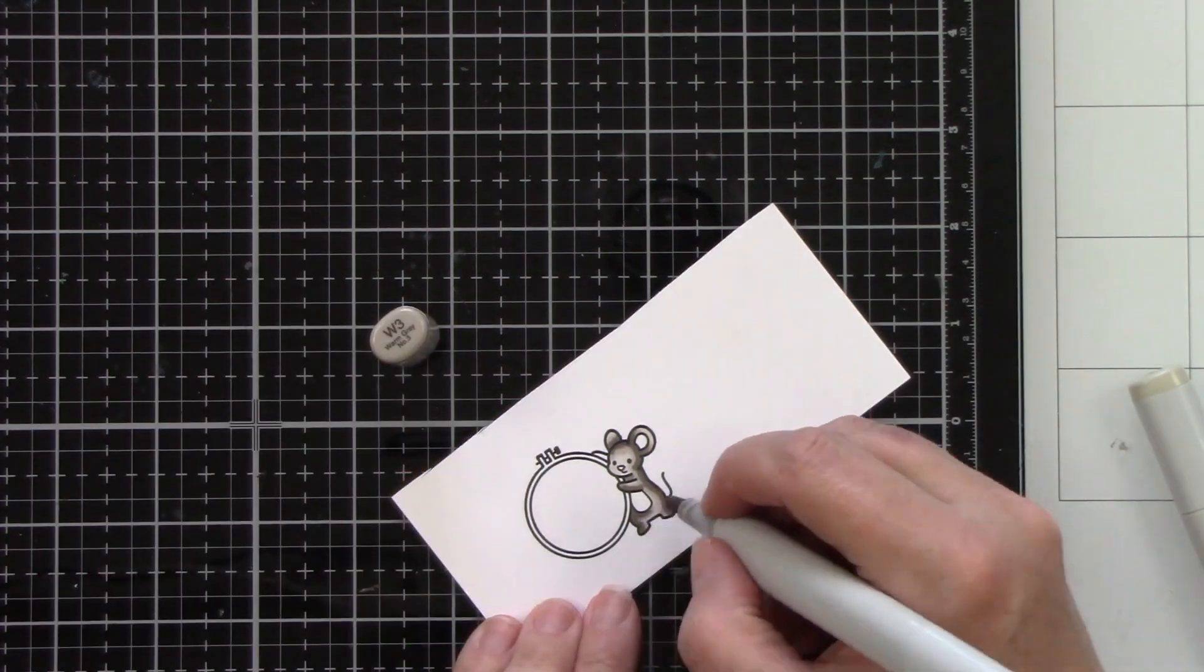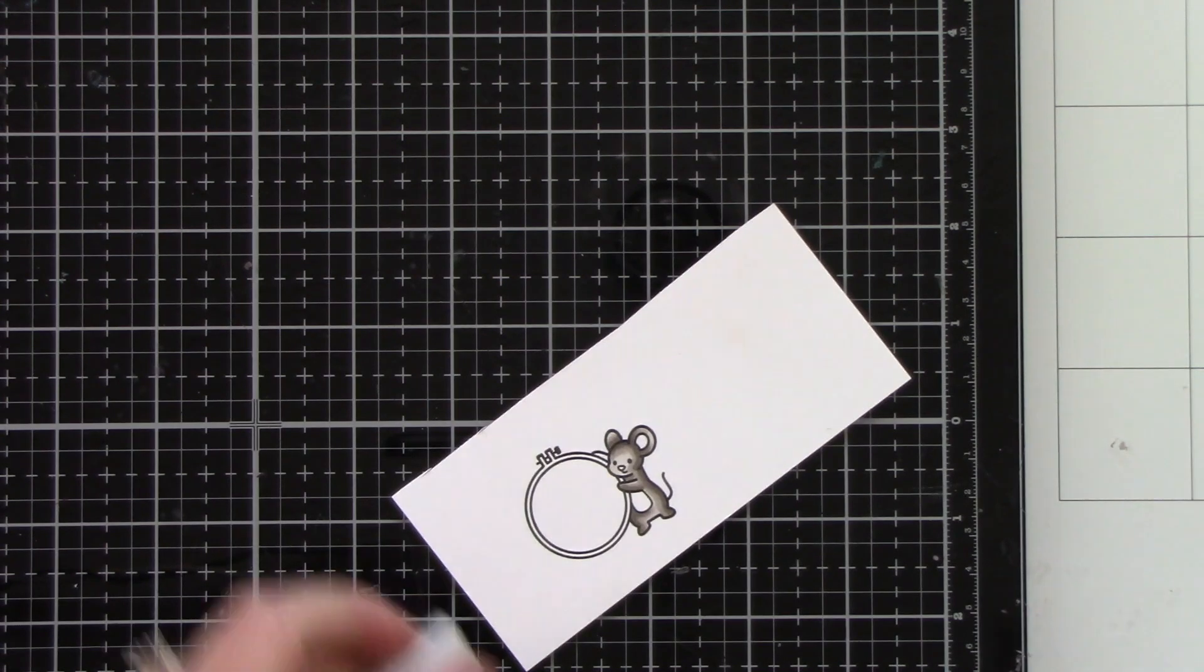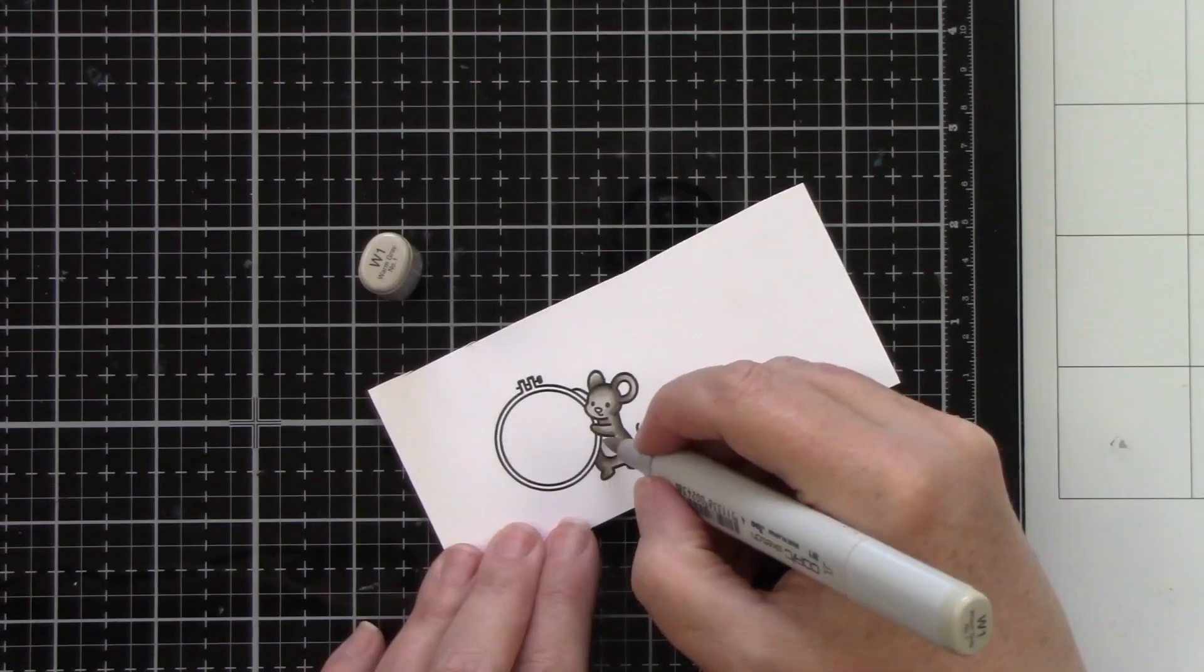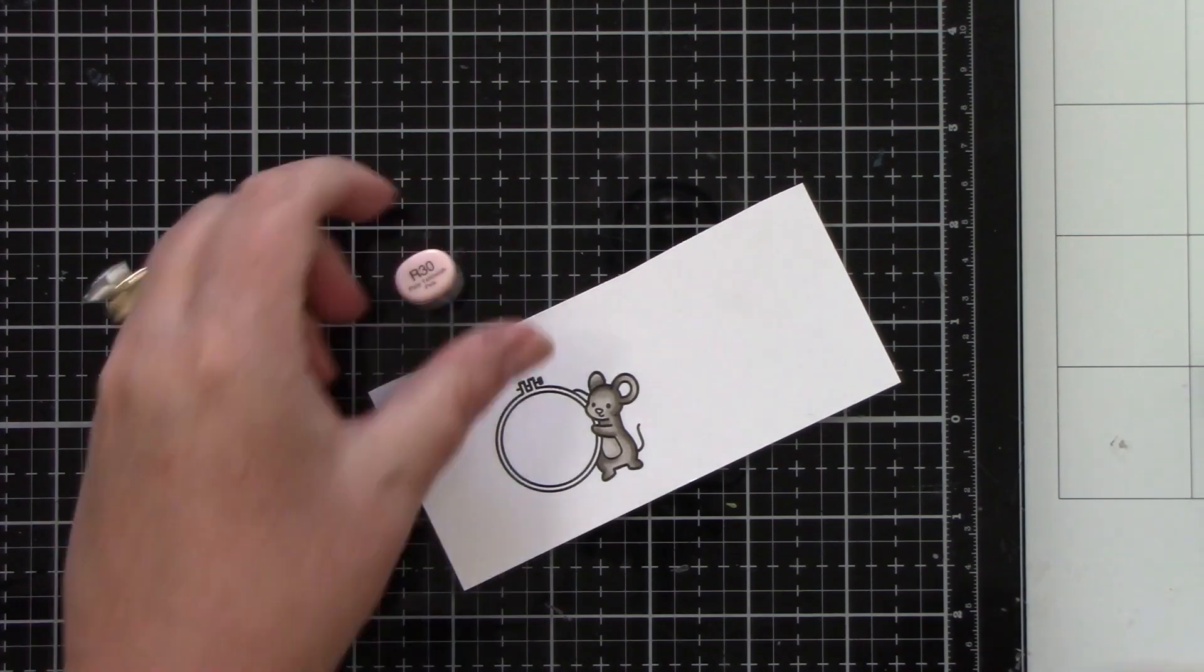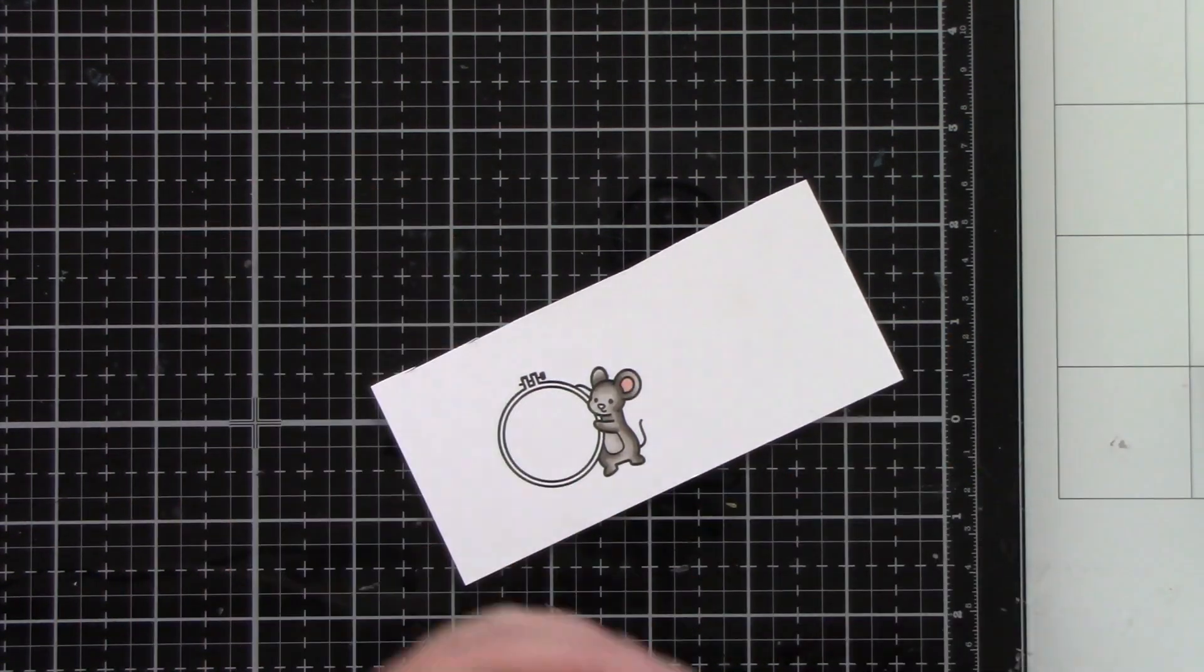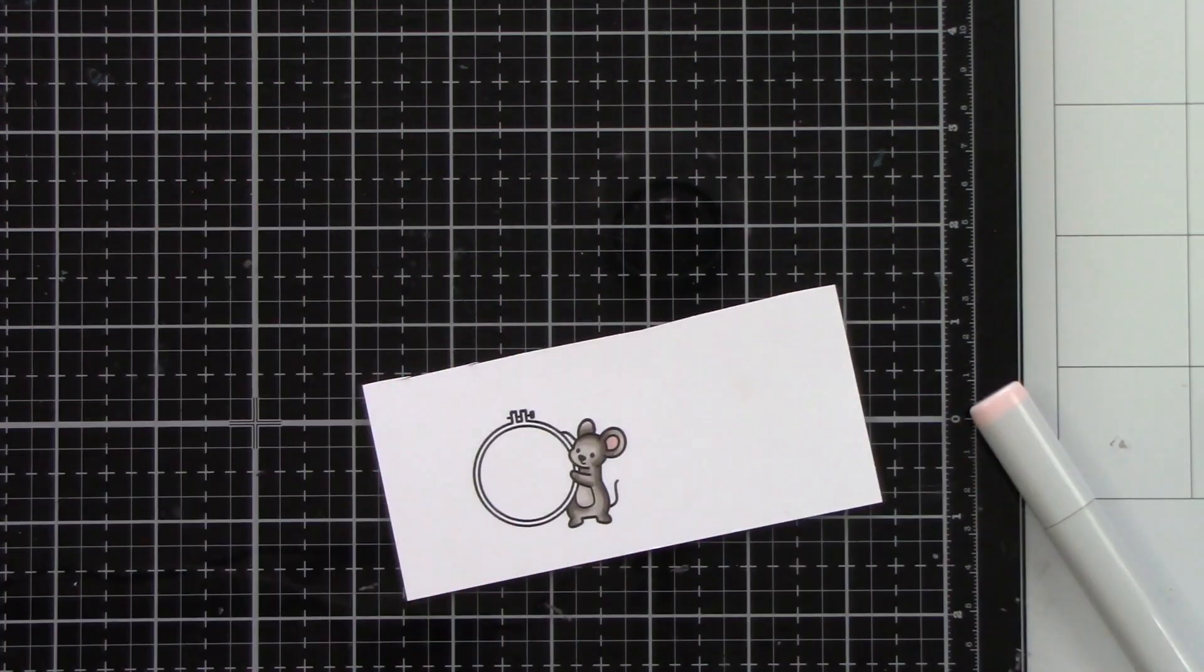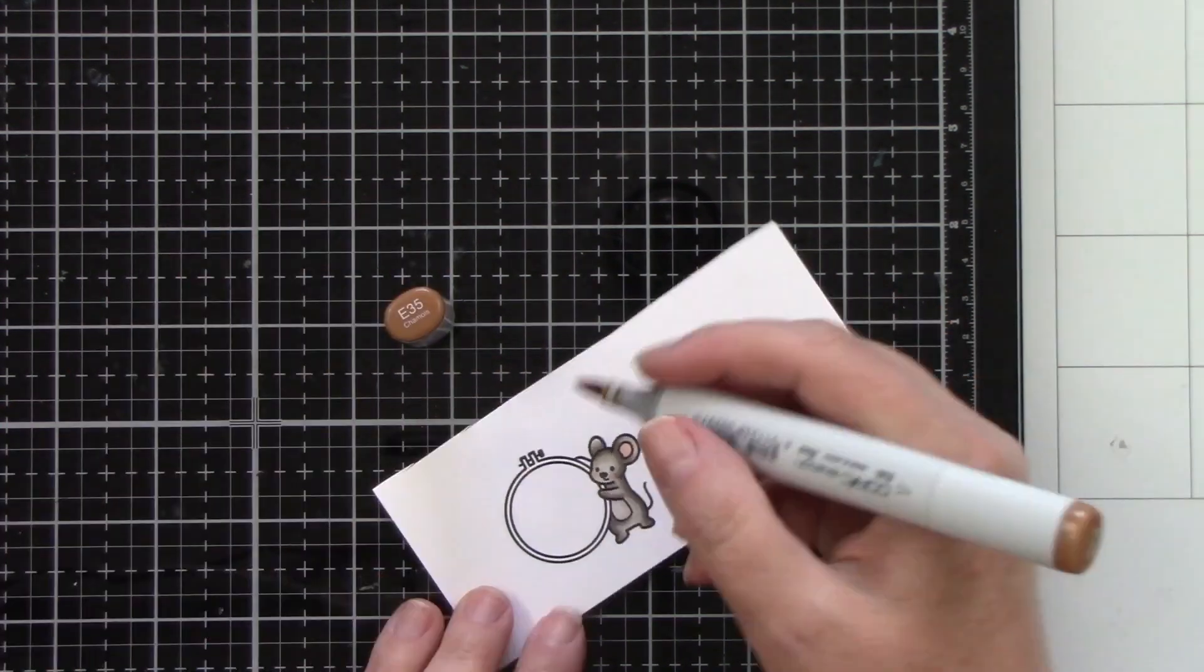So I'm coloring this with my W markers one, three, five and I did bring in seven for the nose so he's a nice little grayish brown mouse. He is so super cute holding that big old embroidery hoop. A little bit of R30 for his ears and a little bit of W1 at the base of his ears just to kind of tone down that pink and then a little bit of pink on his cheeks.